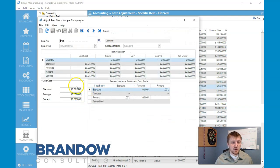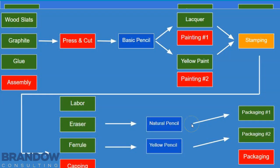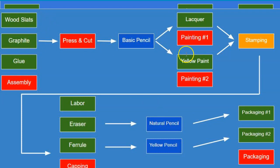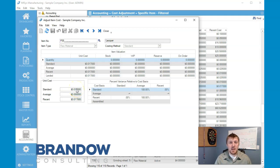And we're back to our mapping screen where we have created wood slots, graphite, glue, lacquer, yellow paint, labor, eraser, ferrule, packaging one, and packaging two — so those are all the things we've been able to make so far with the Create Item function. Go ahead and create the items in MISys and update your map. If any of this is helpful, please like, share, and subscribe, and comment below if there's anything else you need help with. Thanks a lot.